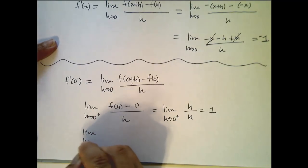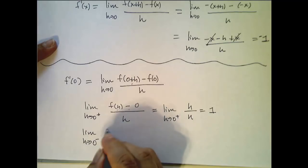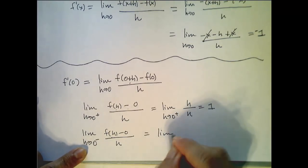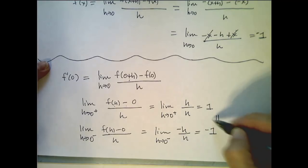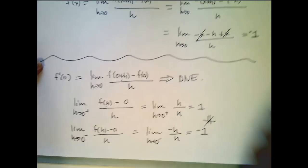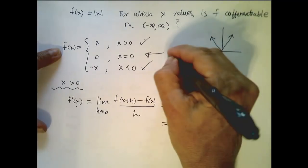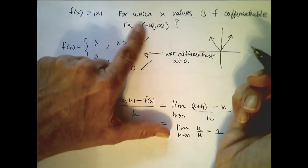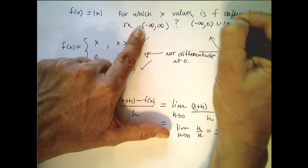Now let's look at it from the left. As h approaches 0 from the left, the limit still becomes f of h minus 0 all over h. But since h is a negative number, f of h equals negative h, giving us the limit as h goes to 0 from the left of negative h over h, which is negative 1. Since these two one-sided limits aren't equal, this limit does not exist. That means f is differentiable for x greater than 0 and for x less than 0, but not differentiable at 0. So f is differentiable on negative infinity to 0 union 0 to infinity, not including 0.